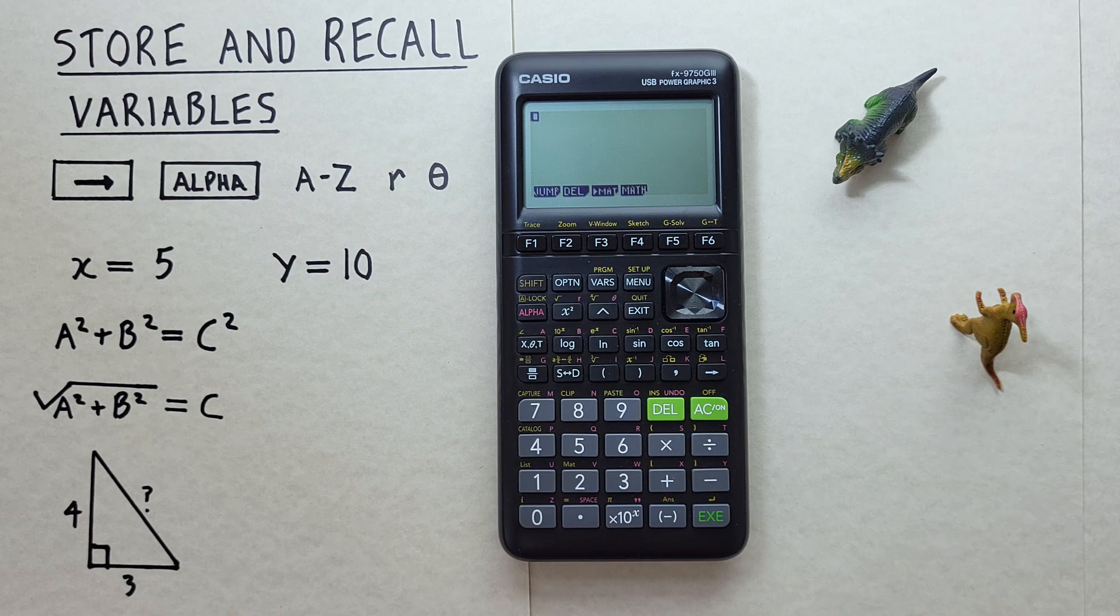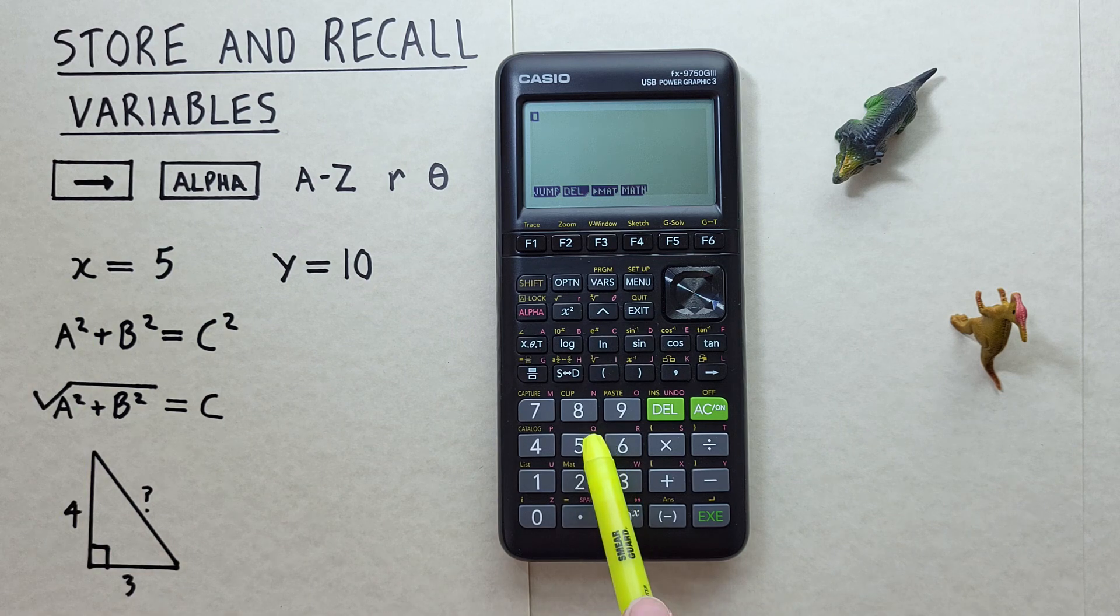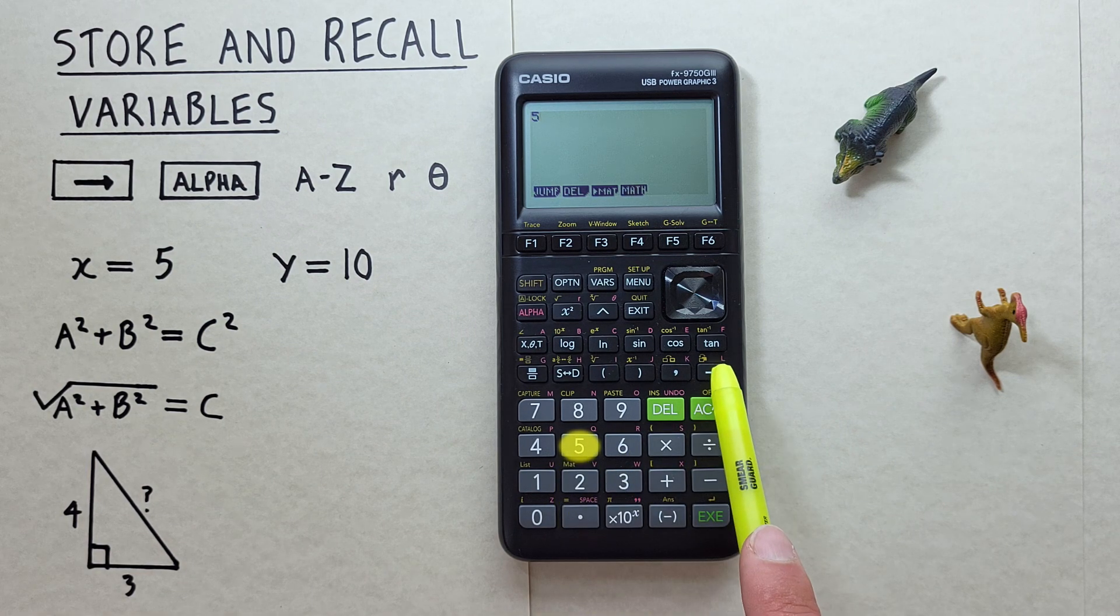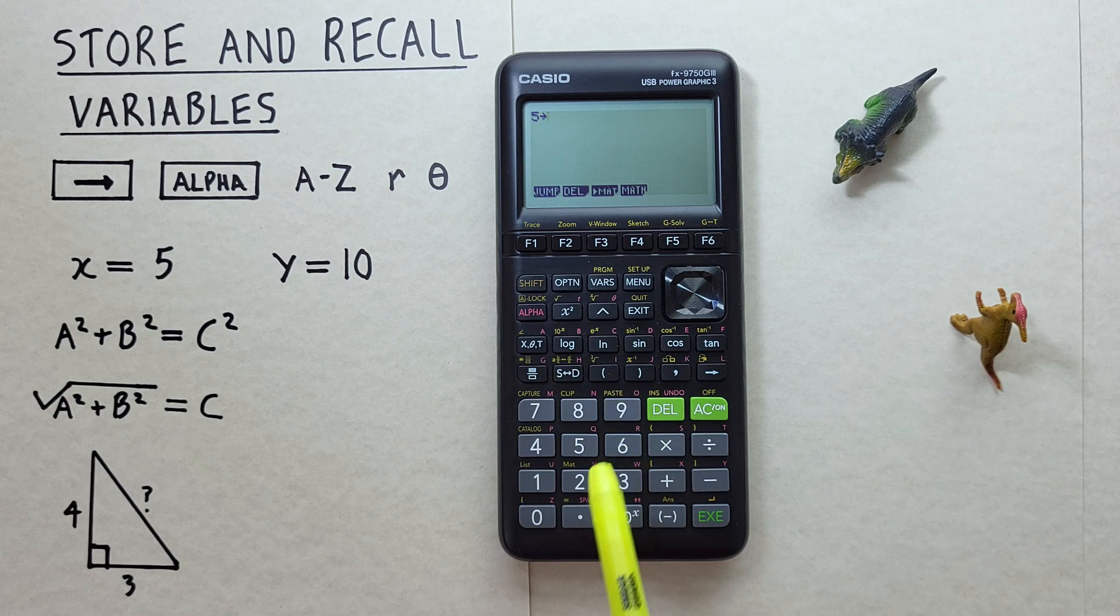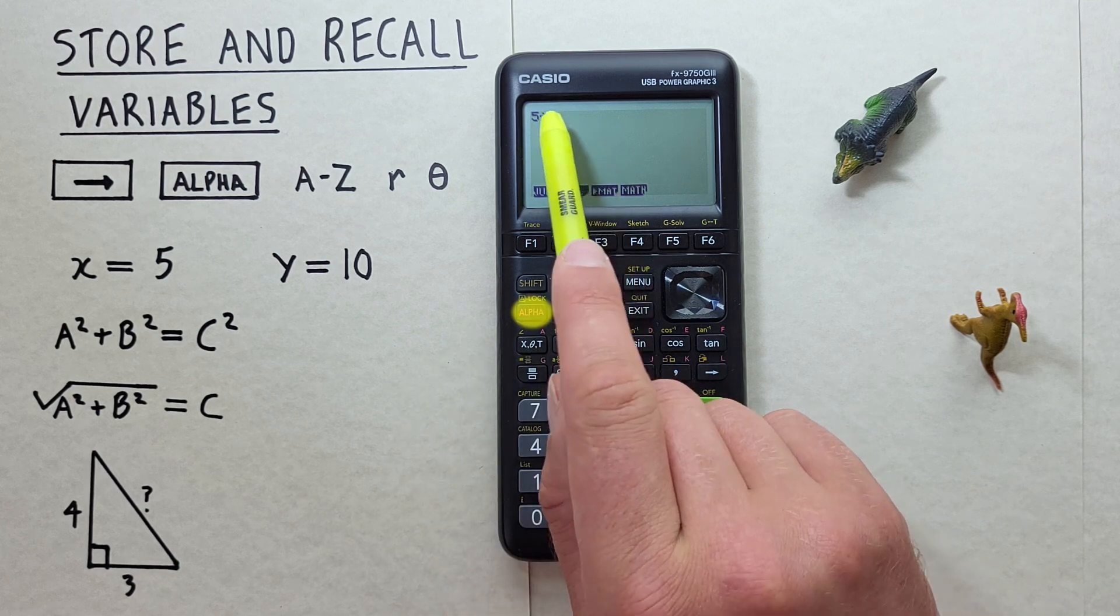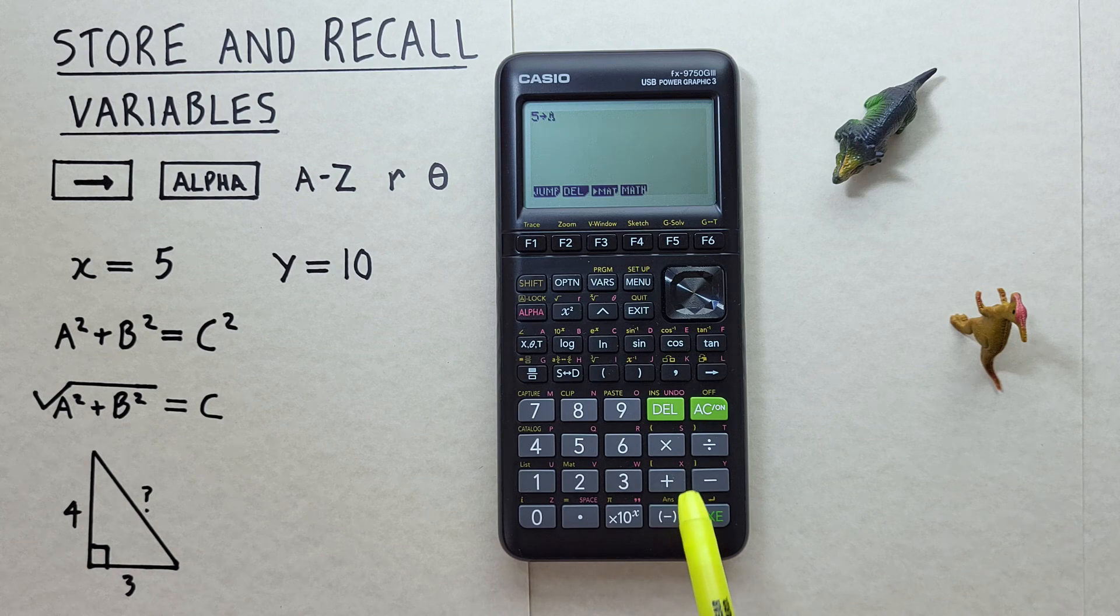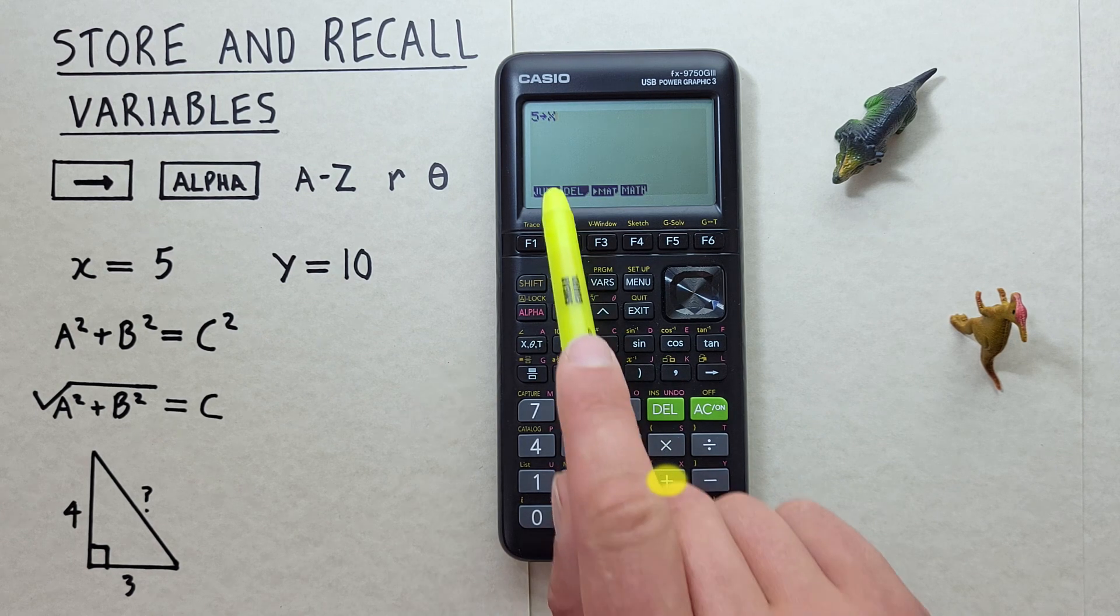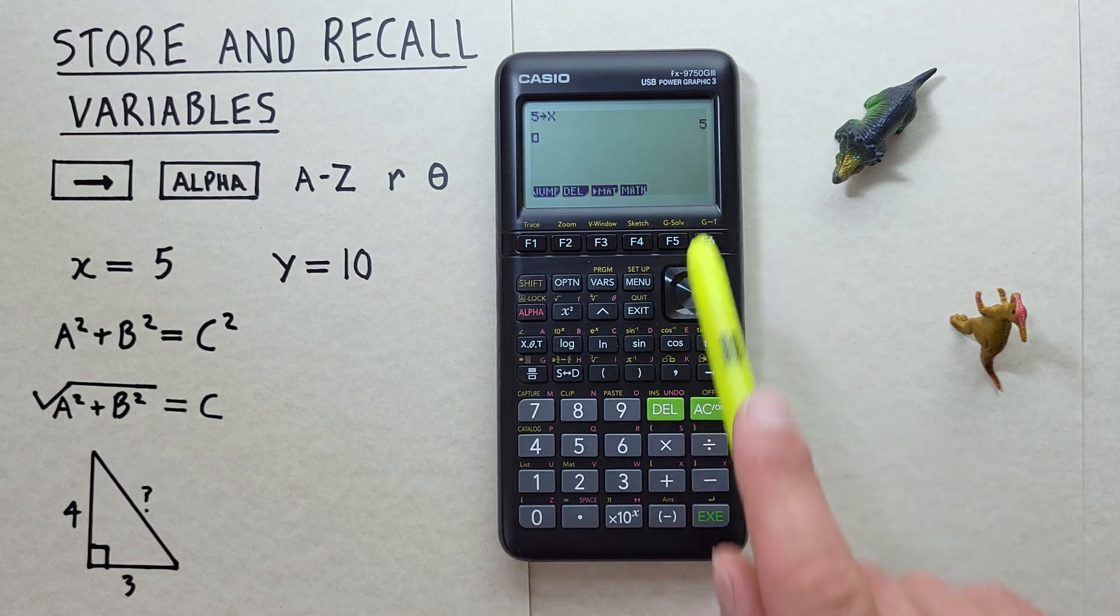First, if we just want to store a value, let's say we want to store 5 as X. We put 5 on our screen and then press the arrow key, then choose the alpha memory slot we want to use. If we want to use X, we press alpha so that we see the A flashing there, and then choose the X memory slot, which is this plus here. We see 5 into X, press EXE, and that 5 has now been stored.